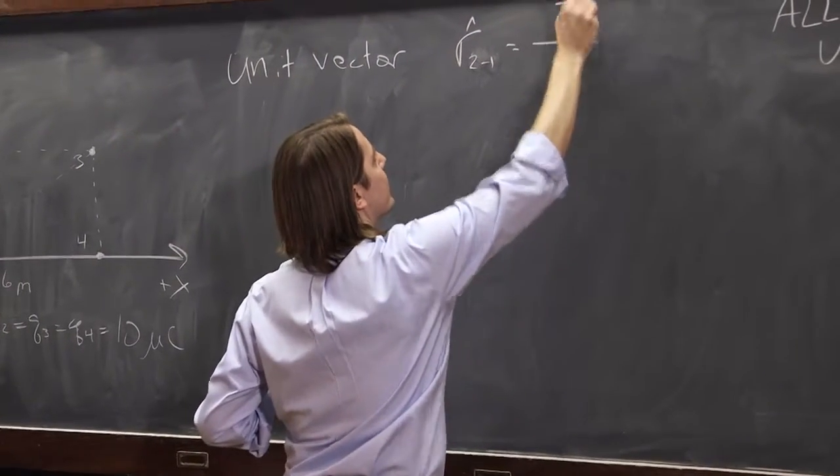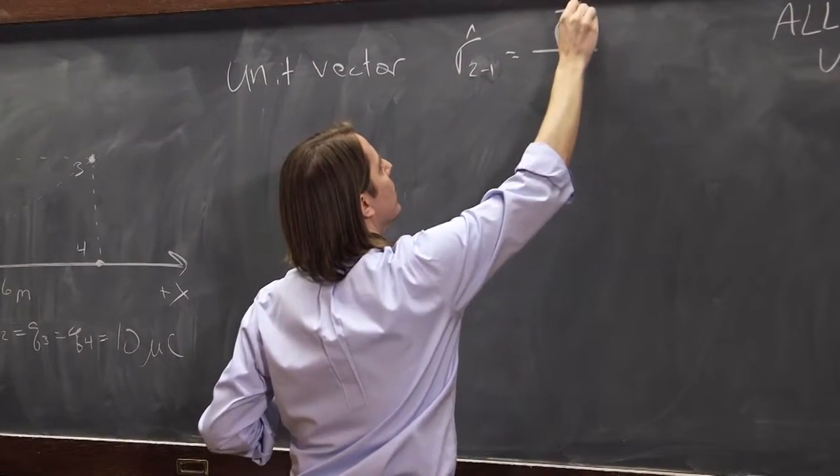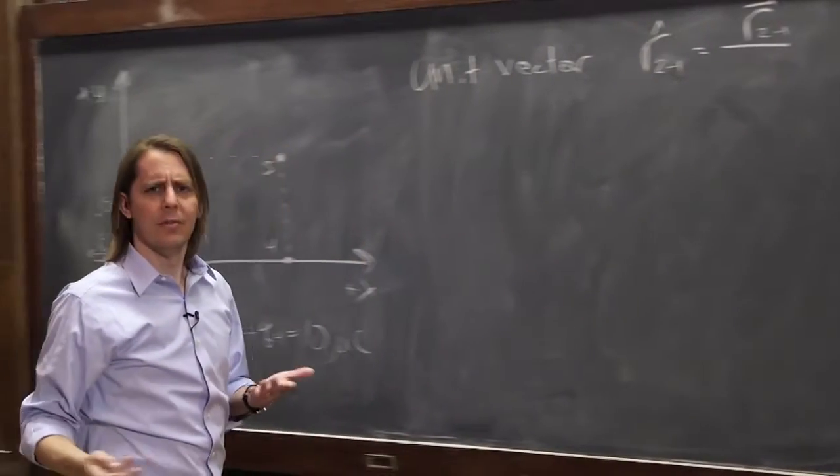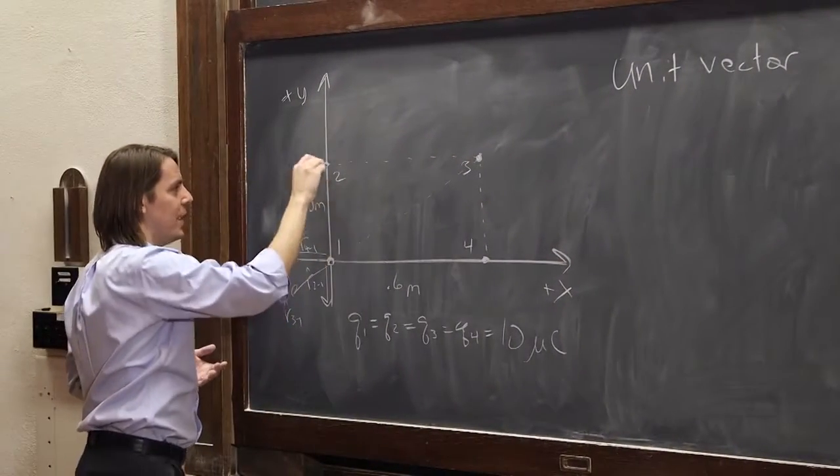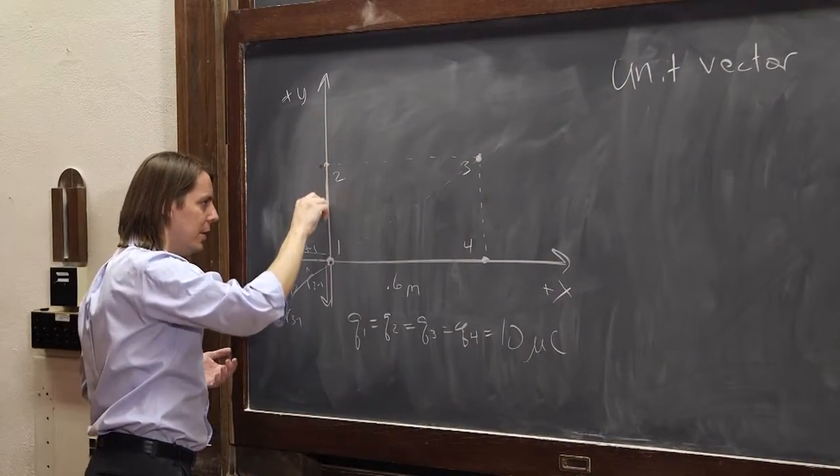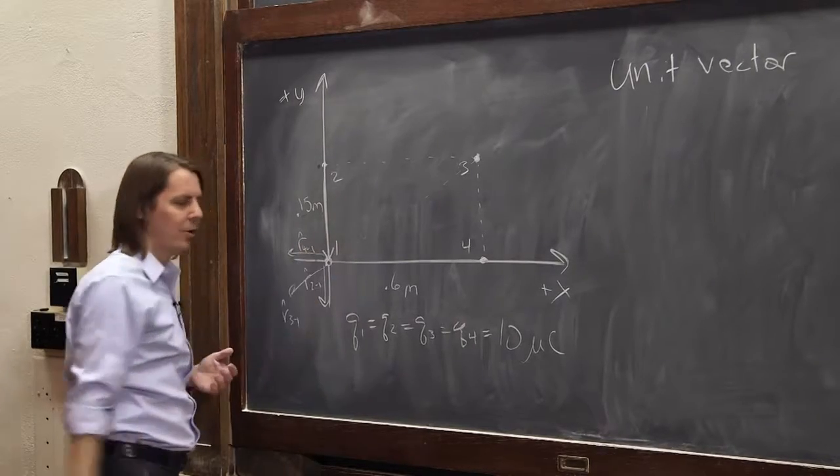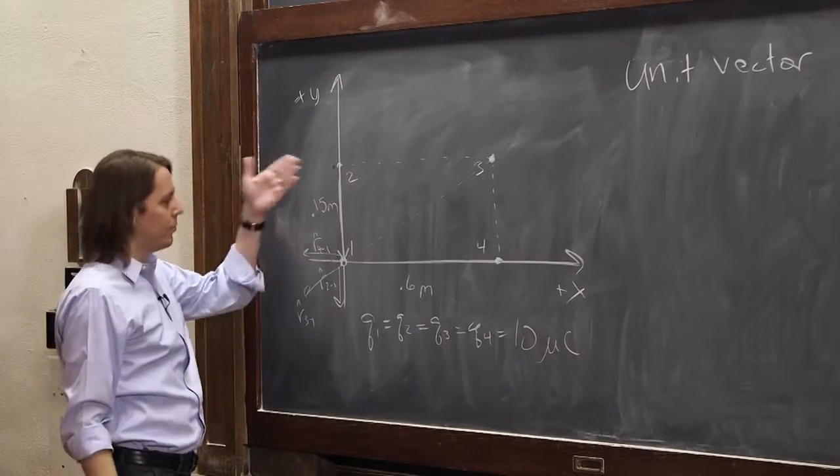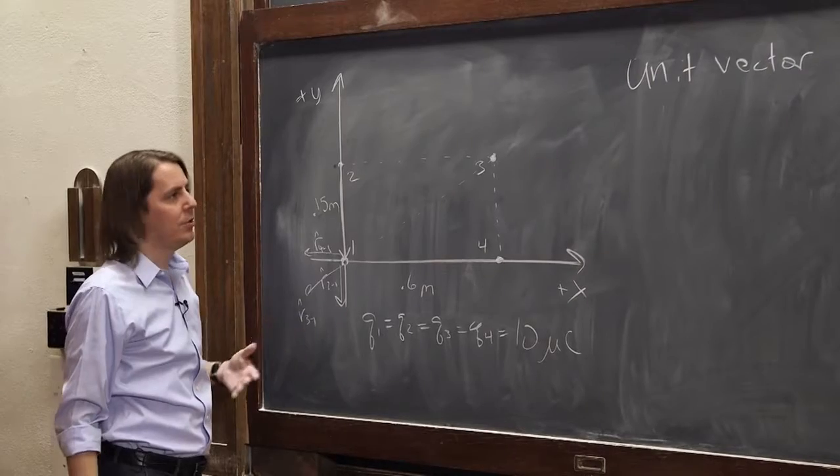The vector 2,1 is literally just I start my chalk at 2, and I go to 1, and I put an arrowhead on it. It's the vector from 2 to 1. Okay, so that's pretty straightforward. There's no guesswork there.